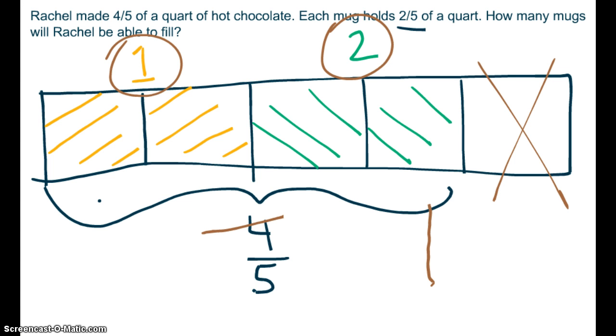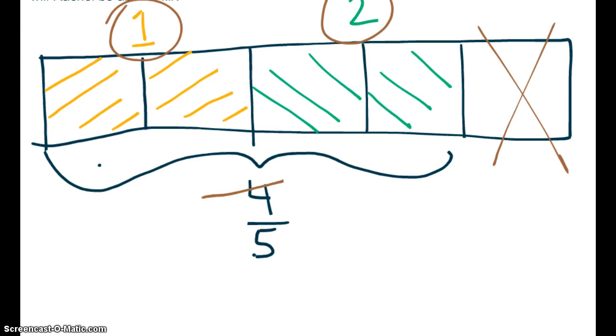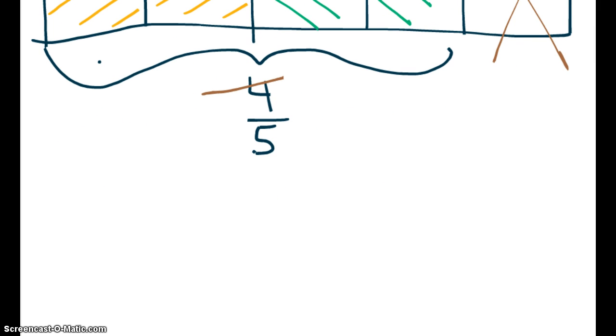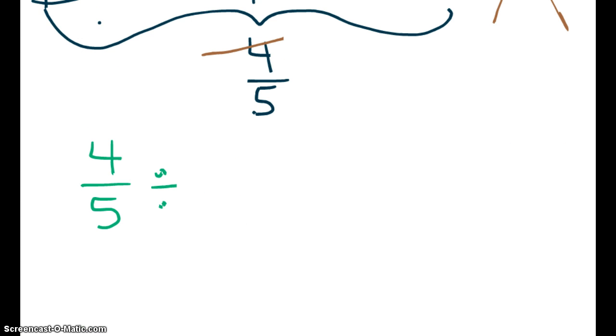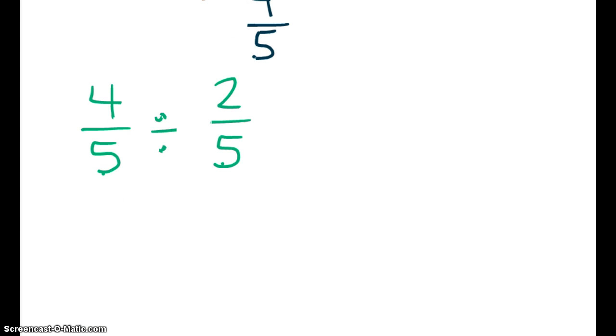So let's think about what we did. We took 4 fifths. That's what we started with. And we split it into equal sized pieces. And the pieces are 2 fifths of a quart. So we already have fraction divided by fraction. So what do we do when we divide fractions? We keep the first number. We change divide to multiply the reciprocal of the second fraction. 5 halves.